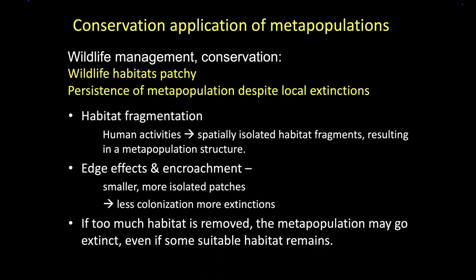Fragmentation makes things more like a patch-matrix environment. Edge effects and encroachment of invasive species tend to make smaller and smaller patches — the core patch gets even smaller as stuff creeps in from the edges, leading to lower colonization rates and higher extinction rates. It's also useful because we can't save every patch everywhere, but it helps us say: we need a minimum number of patches to have this population persist. Metapopulation thinking is helpful in terms of planning, policy, and strategizing when we don't have unlimited funds.